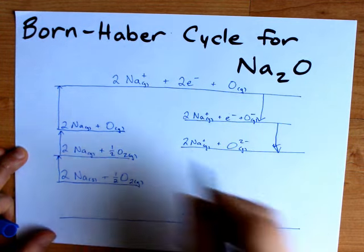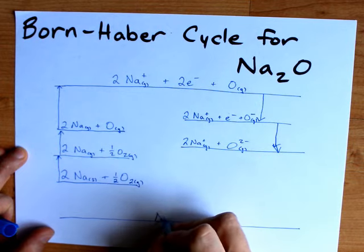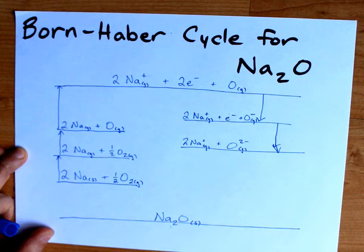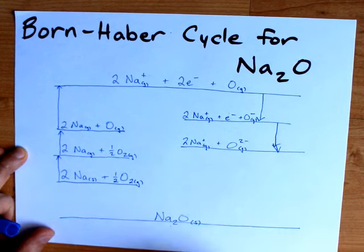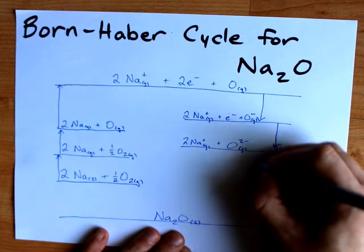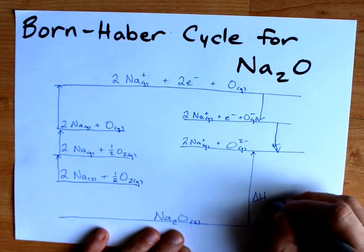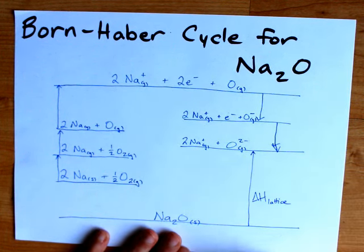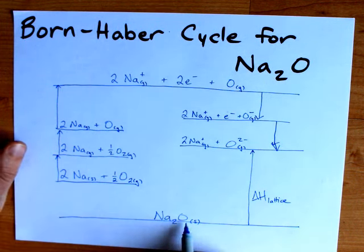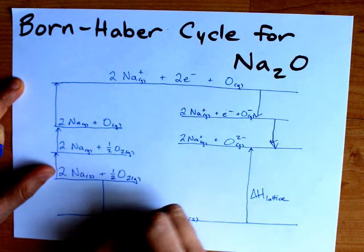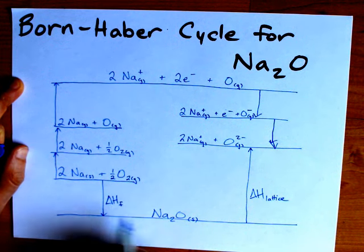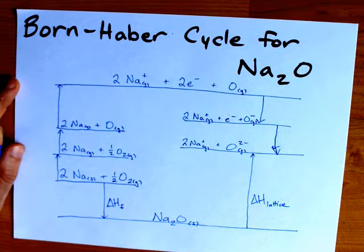The end goal, or the bottom of a Born-Haber cycle, is always the solid ionic compound that you were supposed to create: Na2O. In order to get the gas phase ions from sodium oxide, you need to add energy, and that happens to be called the lattice enthalpy. It goes right here and it is an endothermic process. To get sodium oxide from its pure elements standard state is actually just an enthalpy of formation, ΔHf. For an ionic compound, it is usually exothermic, so I represent it with a down arrow.